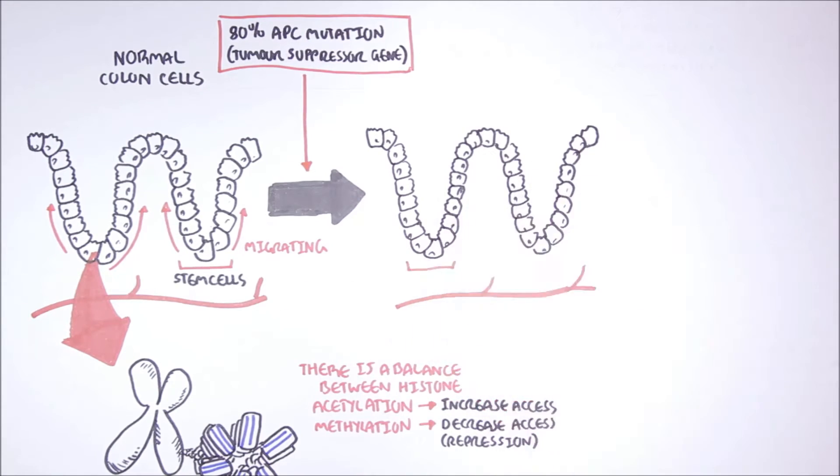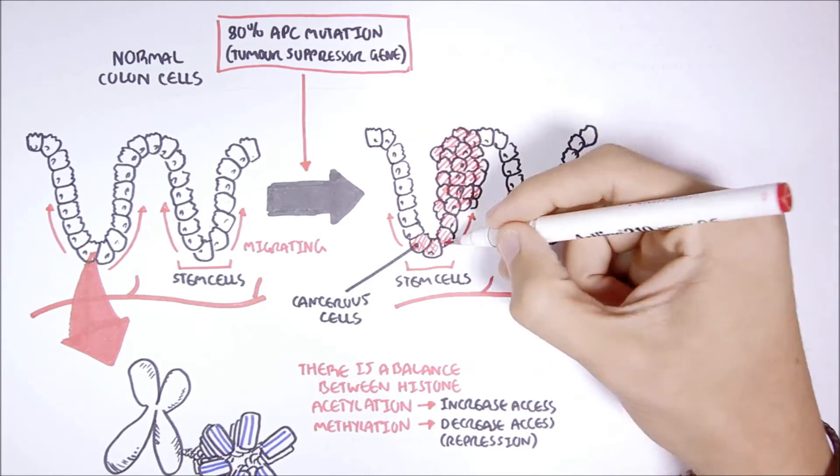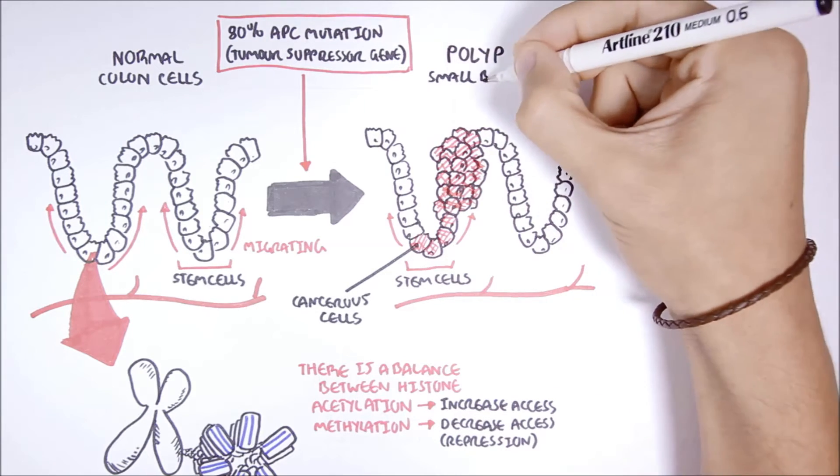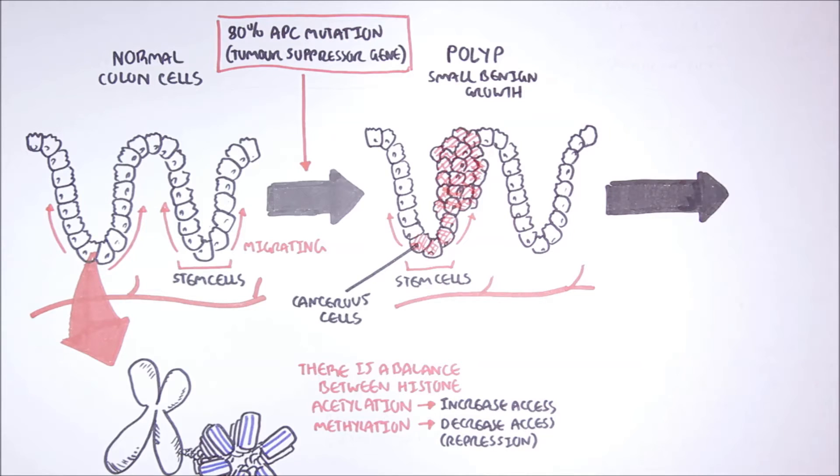And so, as the abnormal cell, the potential cancer cell, moves up, it will begin dividing and dividing, creating a polyp, which is usually a small benign growth.